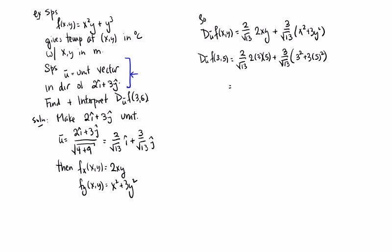So this simplifies a bit. So the numerator, I get 4 times 15 is 60 over root 13. For the second one, we get 5 squared is 25 times 3 is 75, plus 9 is 84 times 3, is 252. So what we get at the end, we get 312 over the square root of 13. So this is approximately 89.6. So what this means is